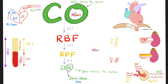Now we have renal plasma flowing inside the renal artery. How much of that will actually get filtered? This is called the GFR and it's about 20% of the renal plasma flow. The other 80% goes to the efferent arteriole and then to the peritubular capillaries, acting as a force that helps you reabsorb or secrete anything you want.